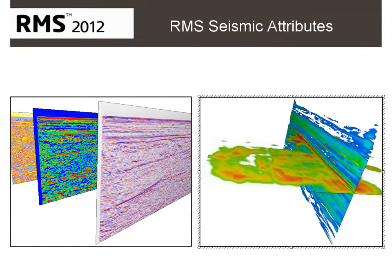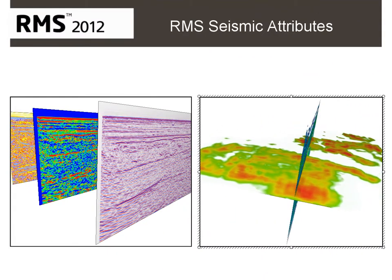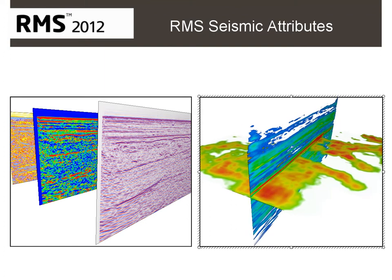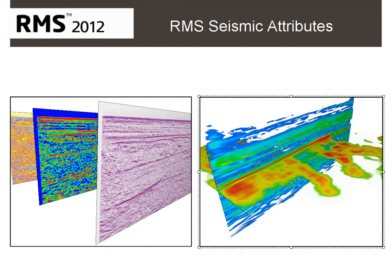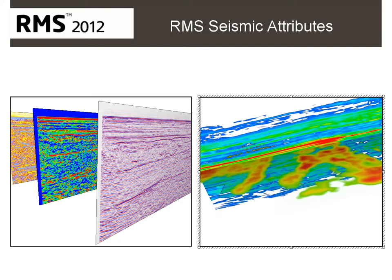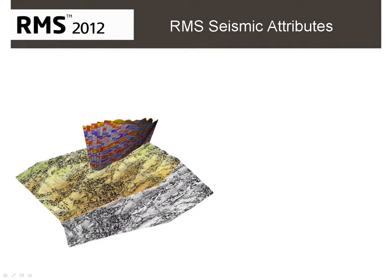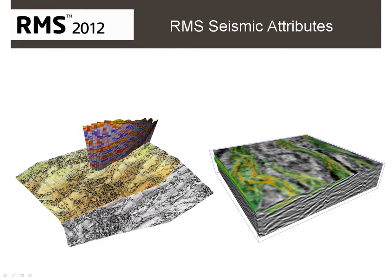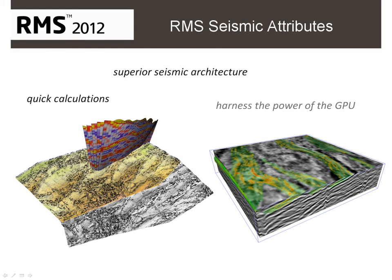RMS 2012's seismic attribute toolkit contains a suite of standard algorithms, particularly useful for interpreting rock properties, structural features and hydrocarbon accumulations. They can assist the creation of your structural models and are an invaluable guide to Feishi's distributions. Calculation is quick too. RMS 2012's superior seismic architecture ensures exceptional speed on mid- to high-end graphics cards, harnessing the power of the GPU for maximum performance.